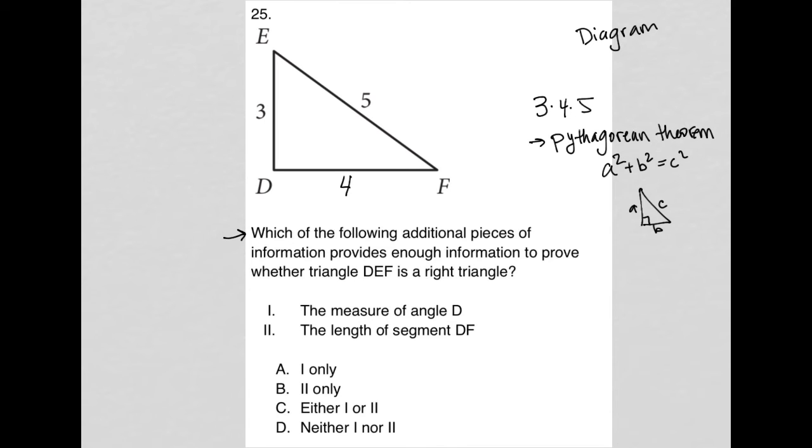So we could have used that as well to figure out that this was four, but that's only four if angle D is a right triangle or is a right angle.